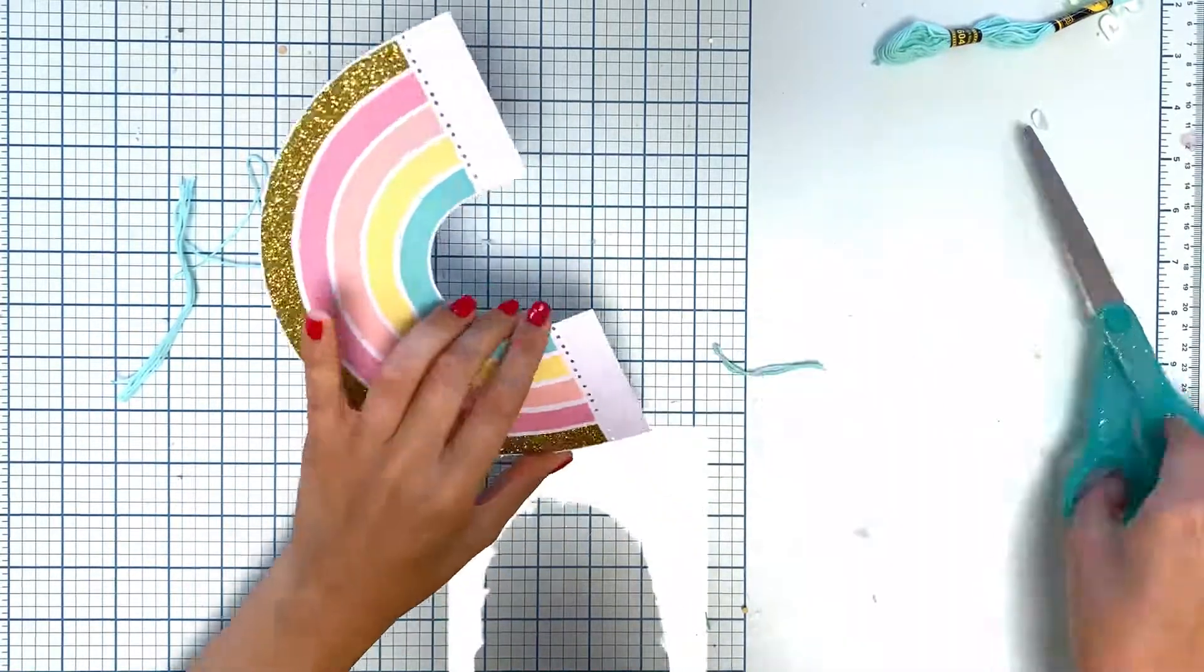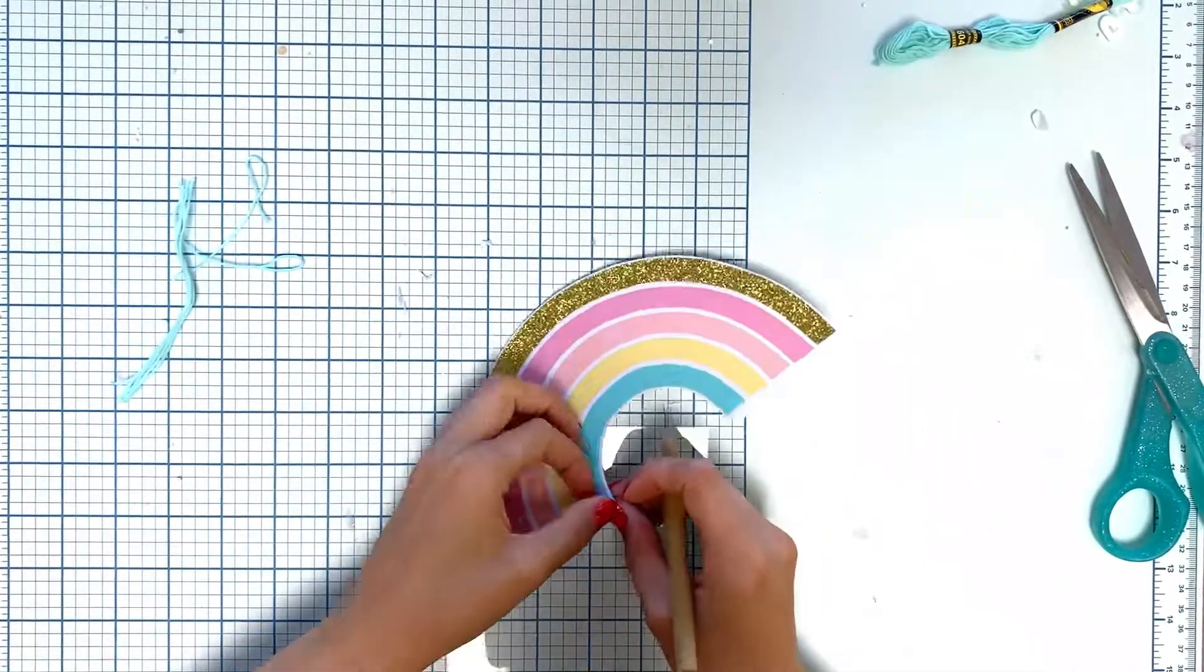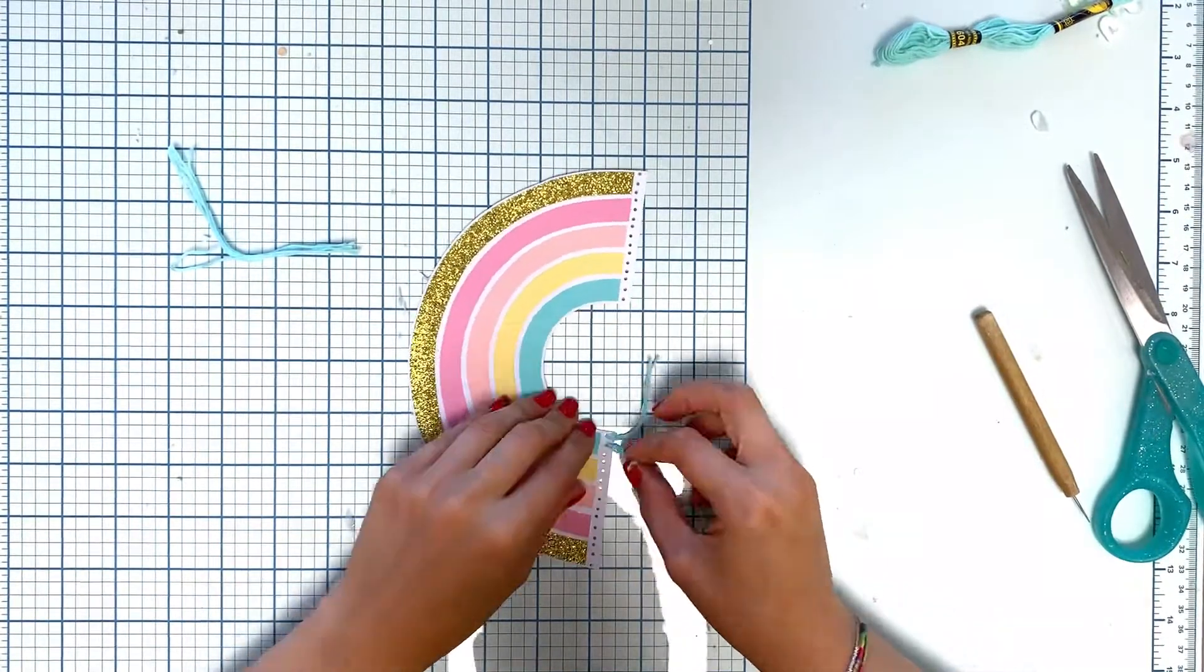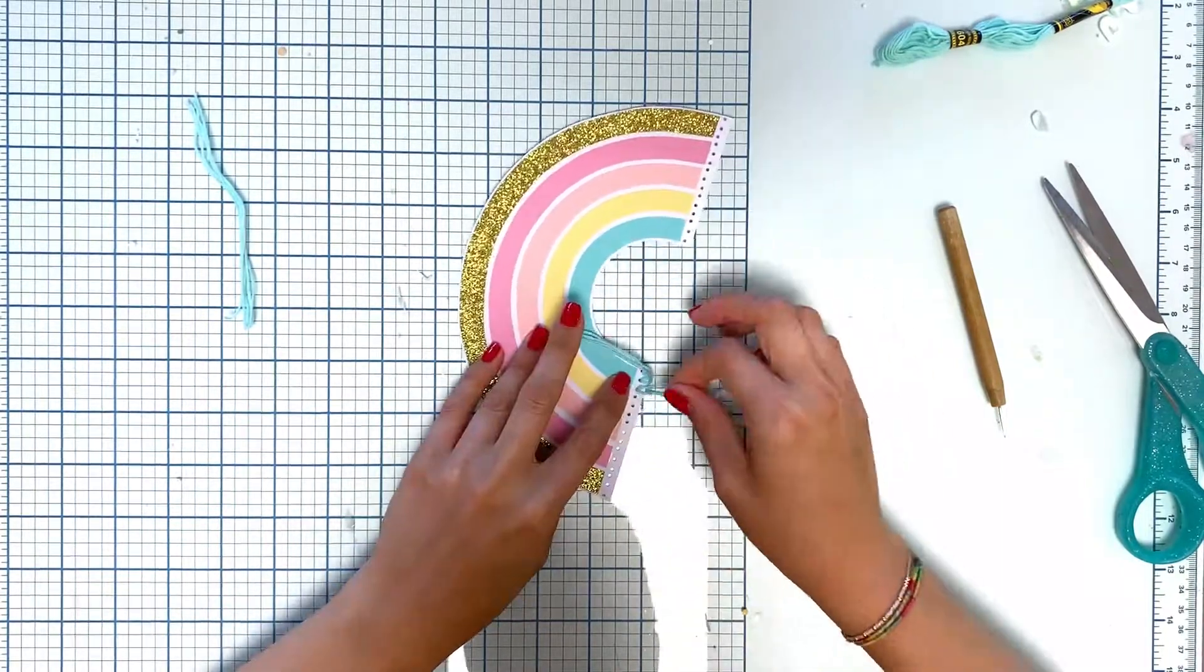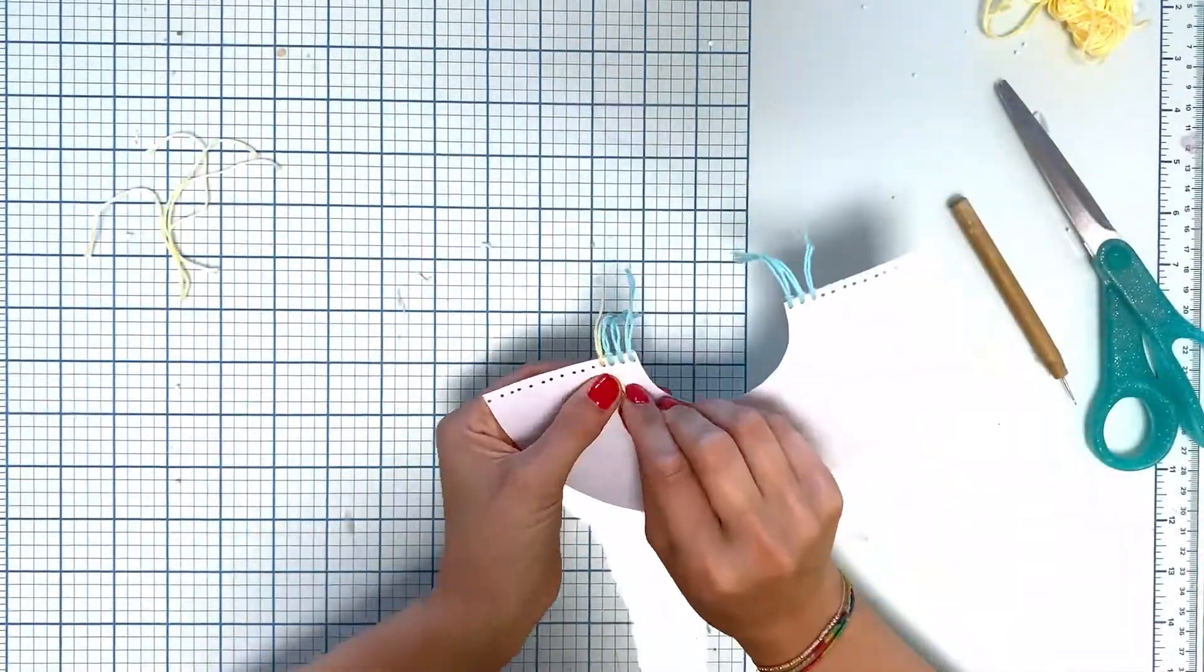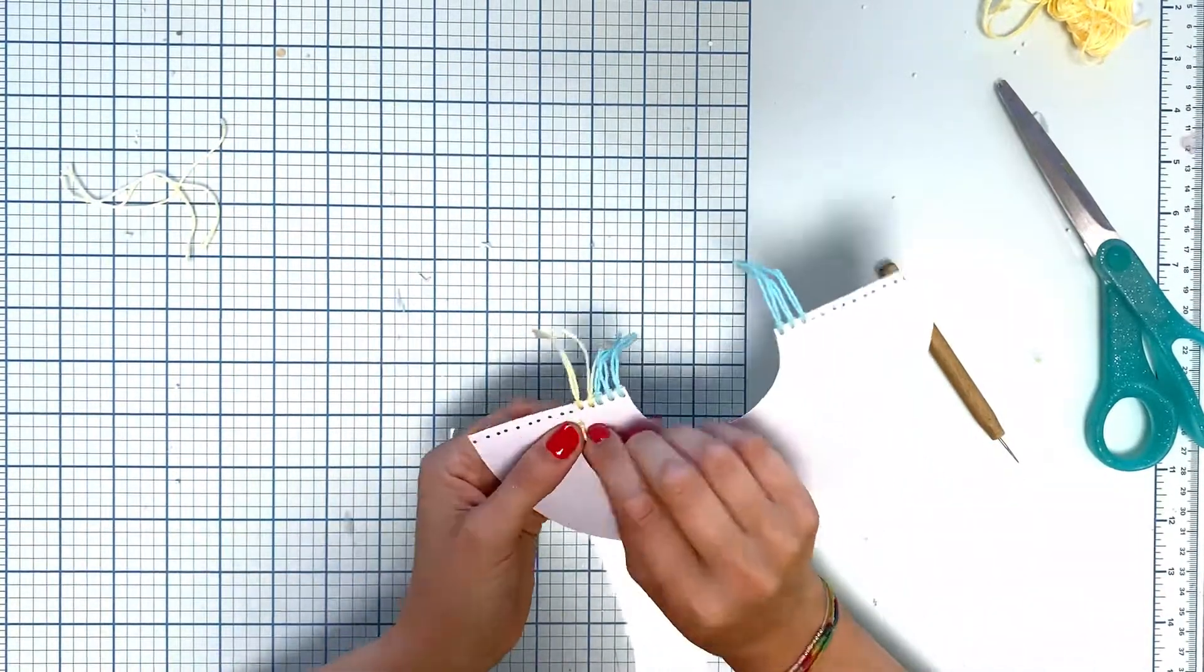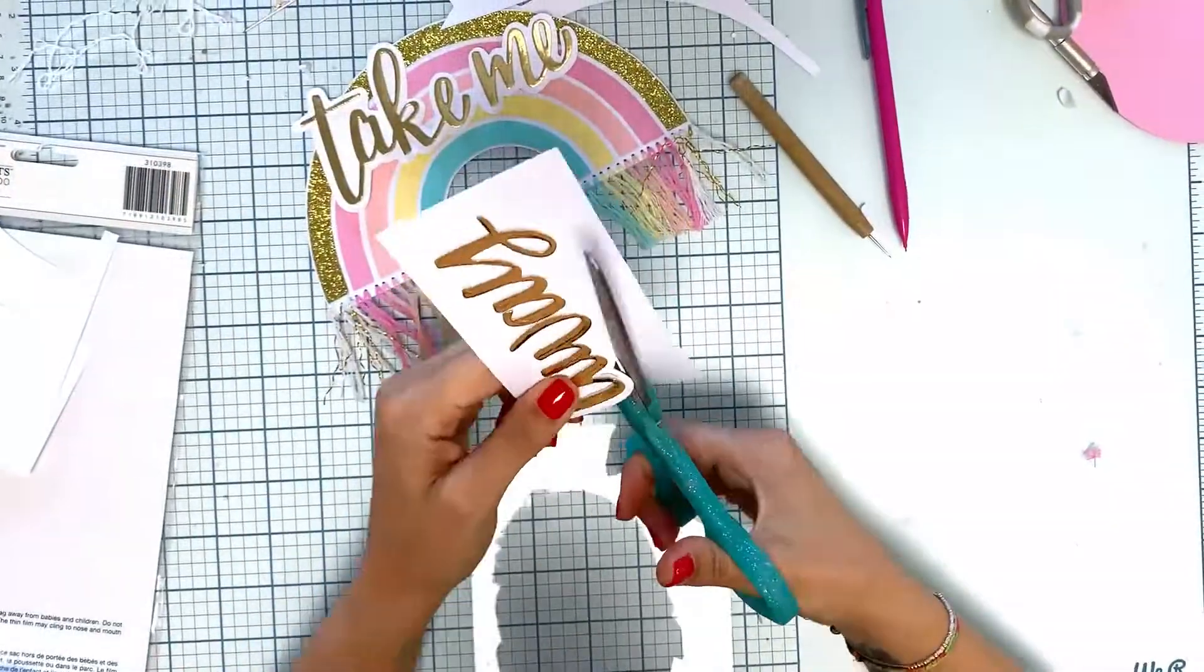I took some embroidery thread in matching colors, cut off some little strands, and put them through the holes. I pulled the strands through the loop that you create in the front. I think everybody knows how to do that technique.